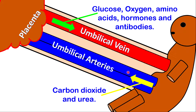The umbilical arteries, which are two, are responsible for taking waste substances from the fetus towards the mother's blood. These wastes include carbon dioxide, urea, and other nitrogenous waste.